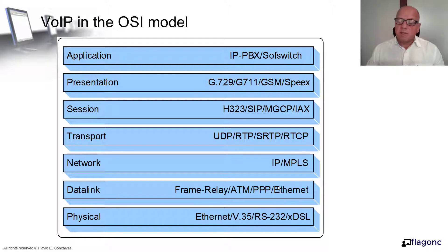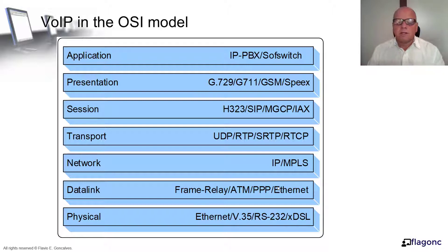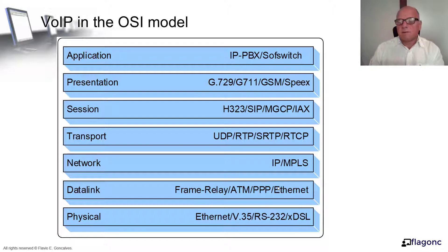For the network layer, we have IP — IP version 4 and IP version 6. In some cases, you also use Multi-Protocol Label Switching, which is the encoding of layer 2 protocols on layer 3, and it's often used for wide area networks. In the transport layer, we have UDP, TCP, and TLS. For voice, we are particularly interested in RTP (Real-Time Transport Protocol), SRTP (Secure Real-Time Transport Protocol), and RTCP (Real-Time Control Protocol), which are often used for Voice over IP.